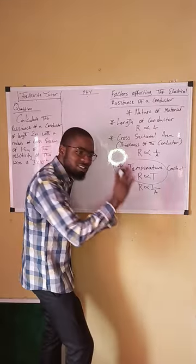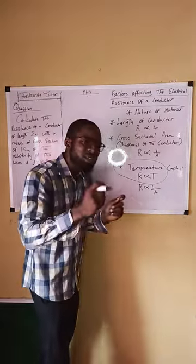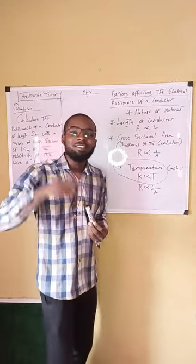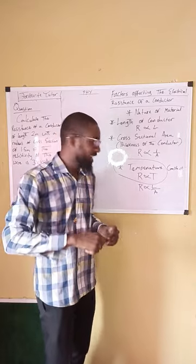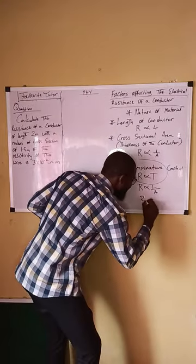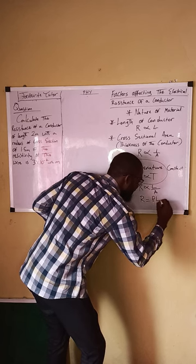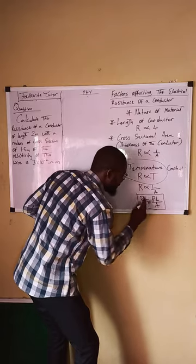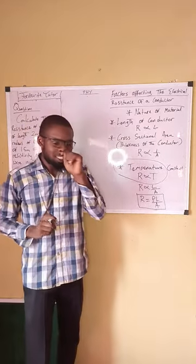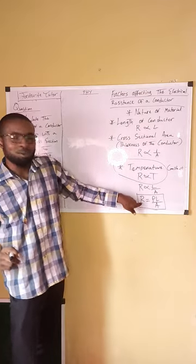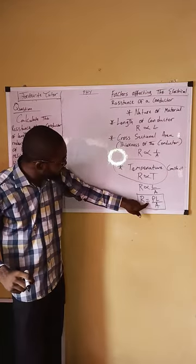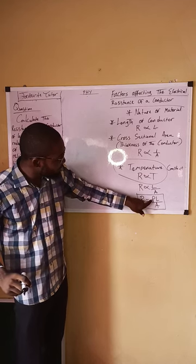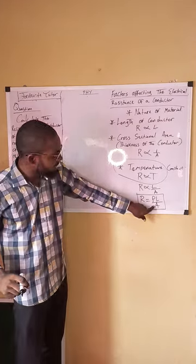If we remove the proportionality symbol, we introduce a constant. That constant is the resistivity of the material. So therefore, the resistance is equal to resistivity times length over area. This is our required equation: R = ρL/A — resistance equals the product of resistivity and length divided by area.